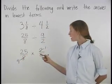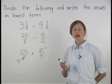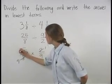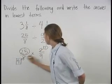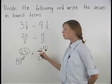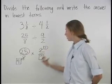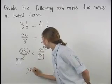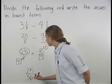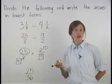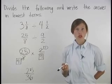However, we can't cross-cancel 9 and 25. So we simply multiply across the numerators and then across the denominators. So we have 25 times 1, which is 25, and 4 times 9, which is 36. So we have 25 over 36, which is in lowest terms.